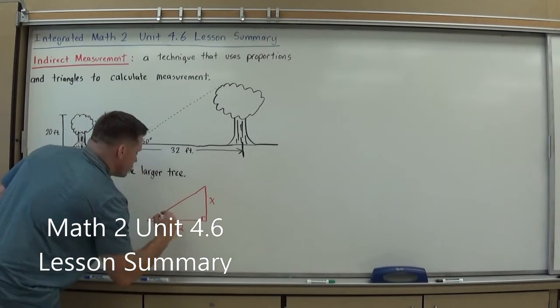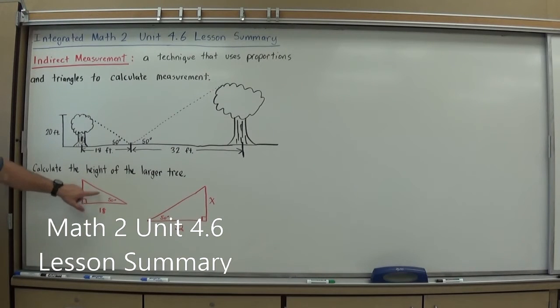I know that these two triangles are similar because of angle, angle. 90-50, 90-50. So I know that they're similar. I just have to match them up appropriately.